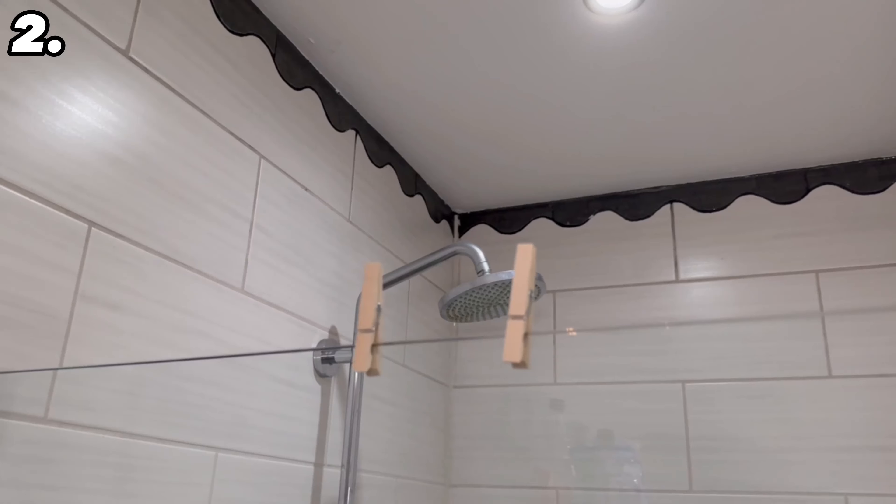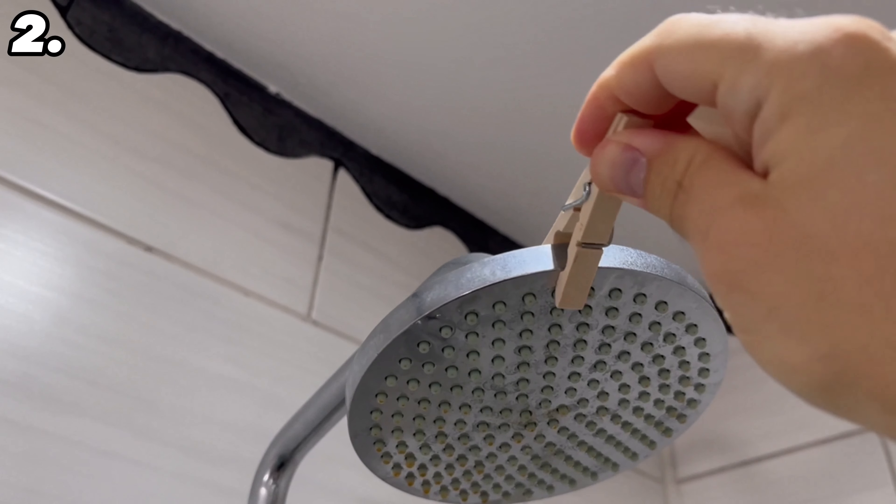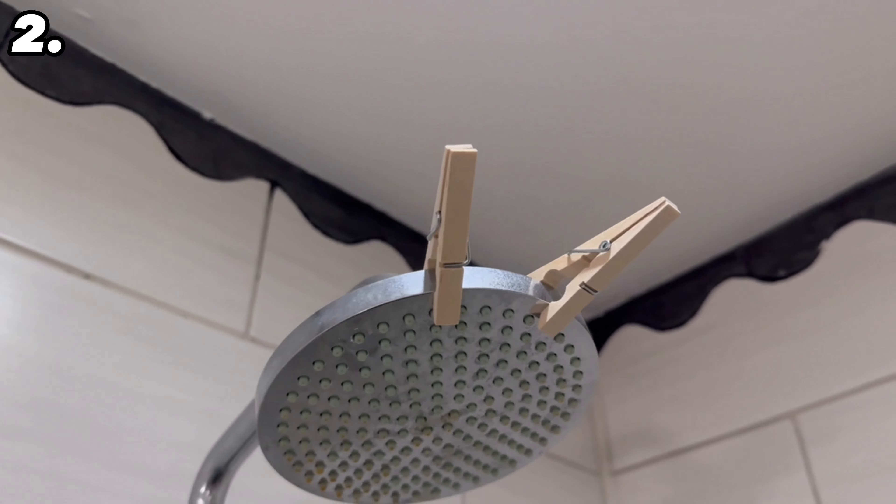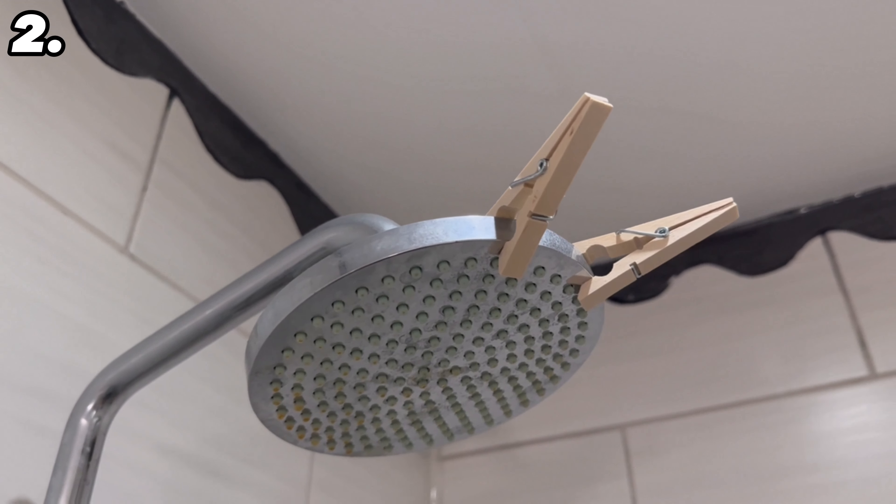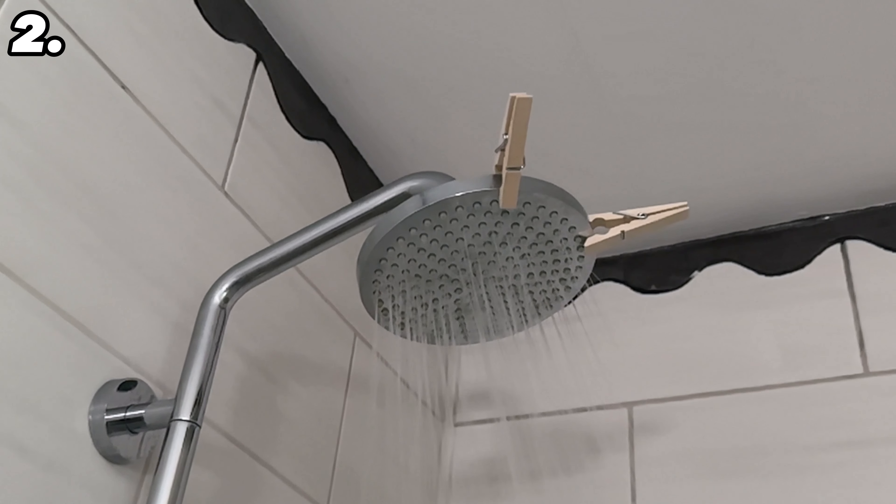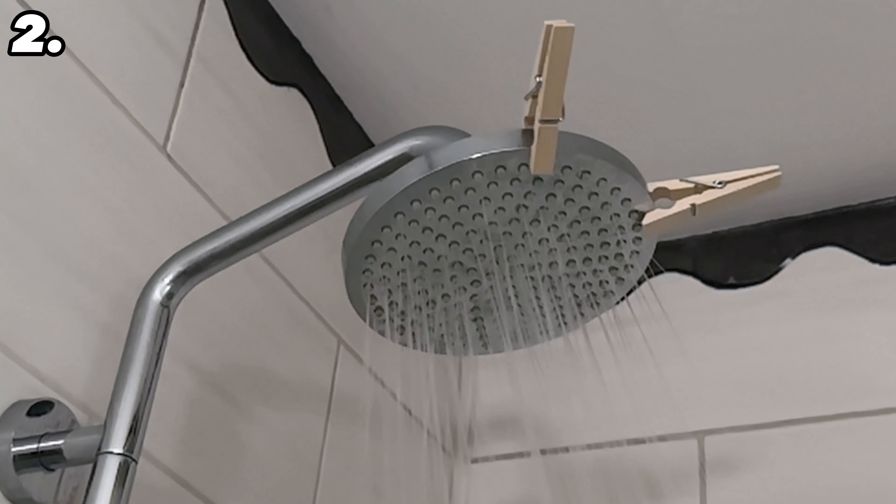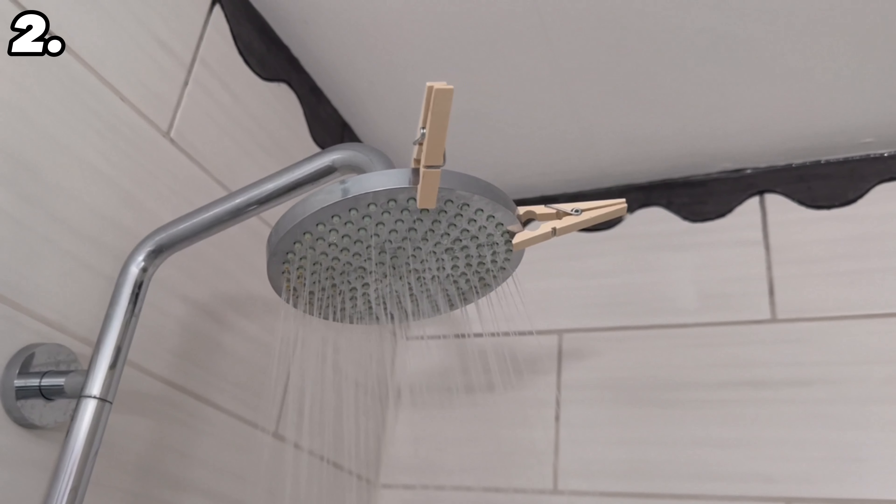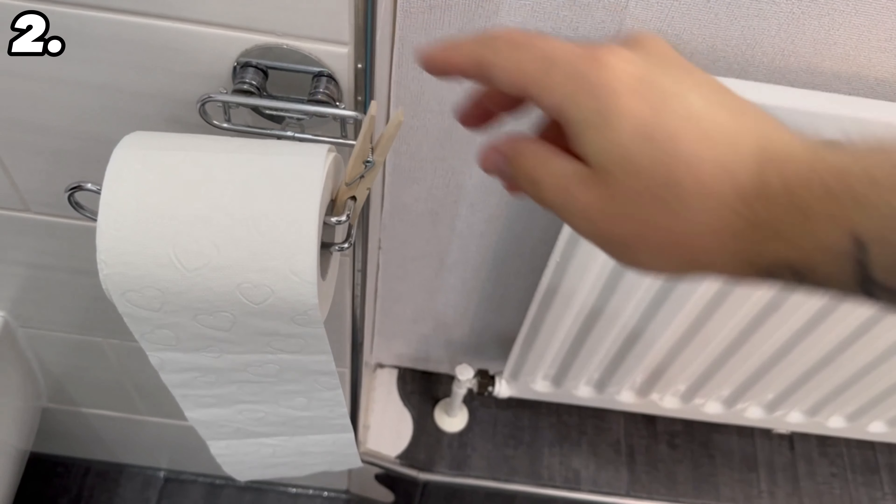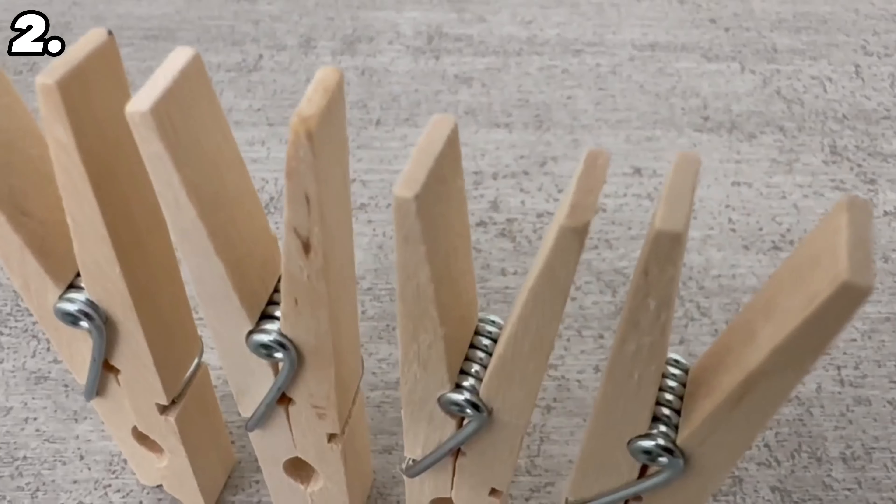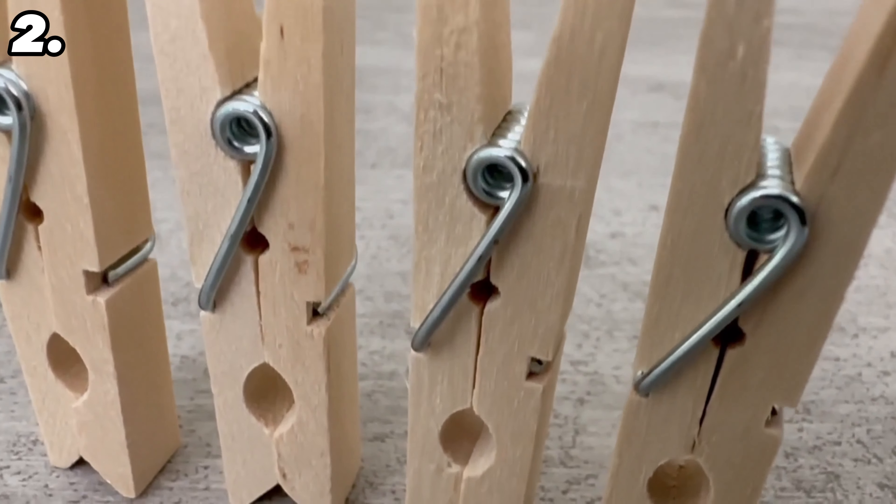You can simply hang the clothespin here or directly on your shower head. This works particularly well if you have a rain shower head. Other places in the bathroom also work, such as somewhere on the toilet roll or anywhere else you can think of. It's important that it's a wooden clothespin because we want to prepare it a little beforehand.